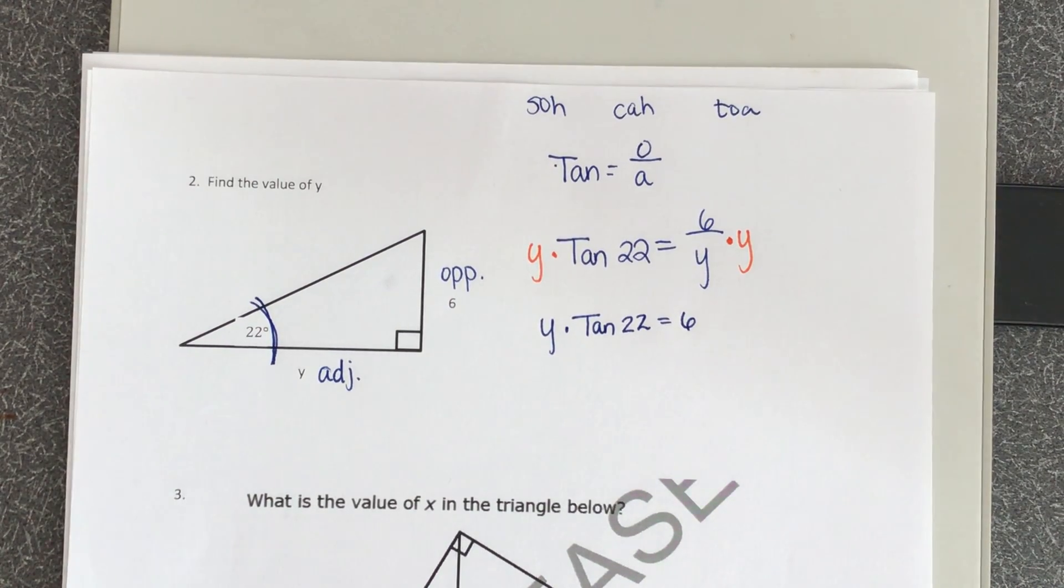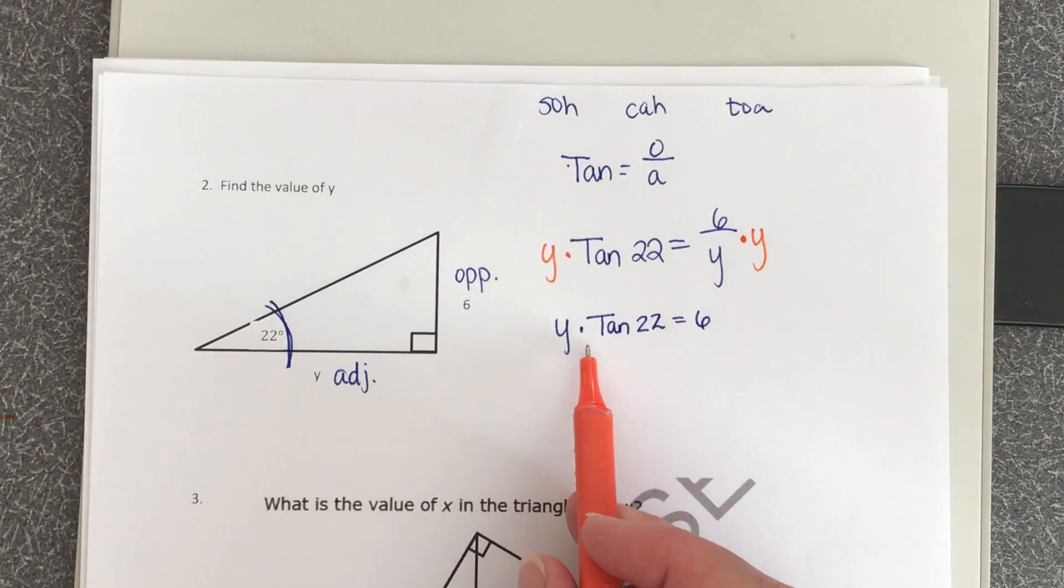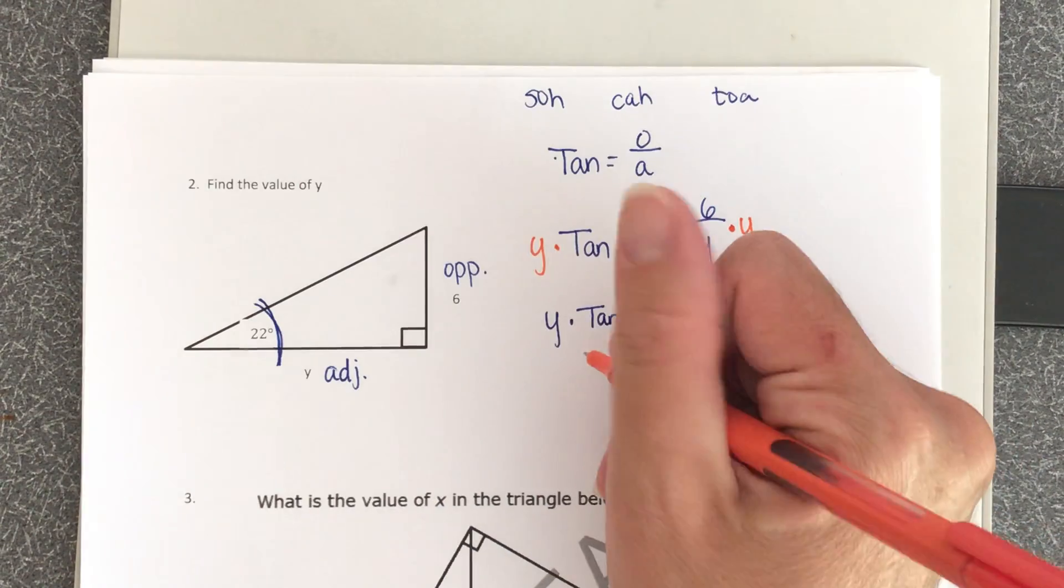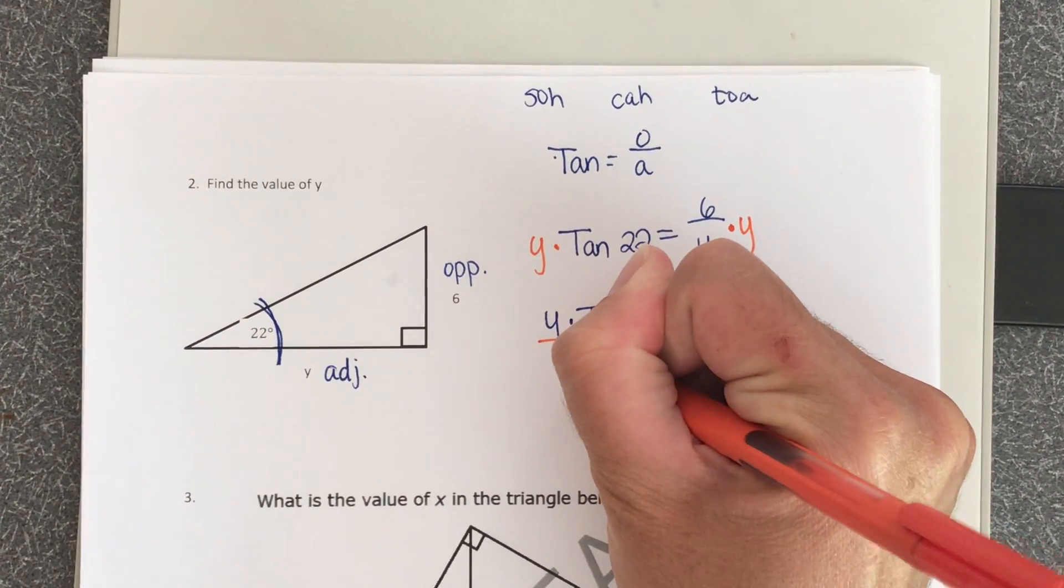So y is still not by itself. So now, how do we undo multiplication? We use division. So now we're going to divide both sides by tangent 22.